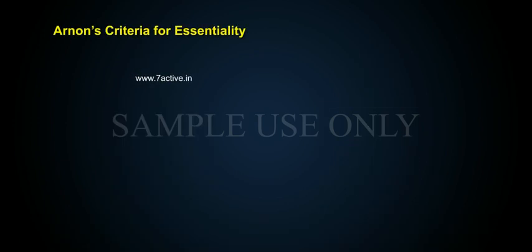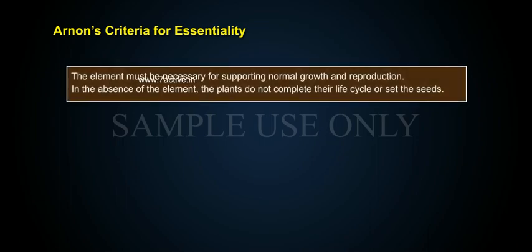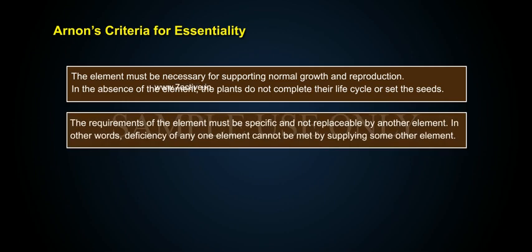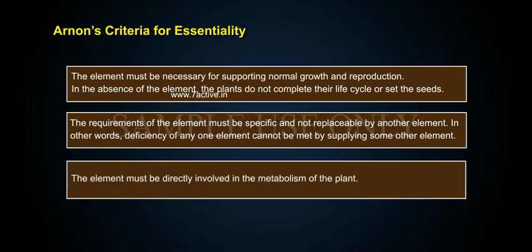According to Arnon's Criteria for Essentiality: first, the element must be necessary for supporting normal growth and reproduction — in the absence of the element, the plants do not complete their life cycle or set seeds. Second, the requirement of the element must be specific and not replaceable by another element; deficiency of any one element cannot be met by supplying some other element. Third, the element must be directly involved in the metabolism of the plant.